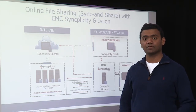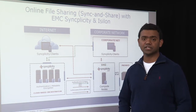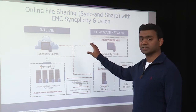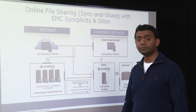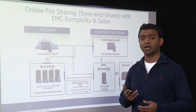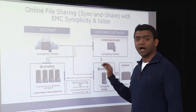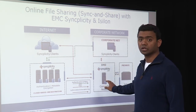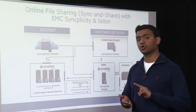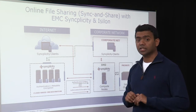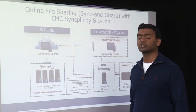What we wanted to show you next is the data flow for a file request to and from a client computer or mobile device. The first step is authentication, which is initiated by the Syncplicity client on the device by connecting to the orchestration component in the cloud. Enterprises also have the option to make use of SAML or OpenID SSO for their authentication needs. During an upload, when a file is created on a device, it is sent to the compute component of Syncplicity, which will then generate an encryption key and store the encrypted data on the Isilon storage.